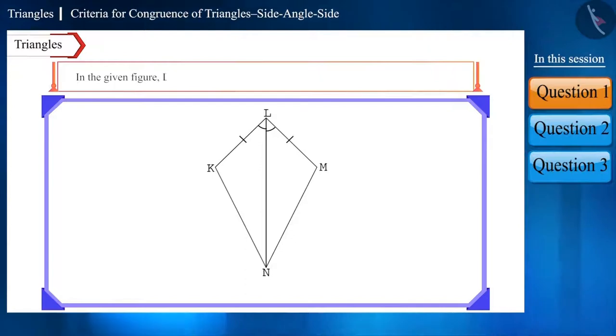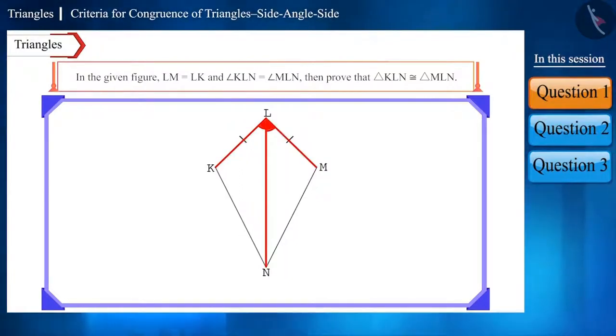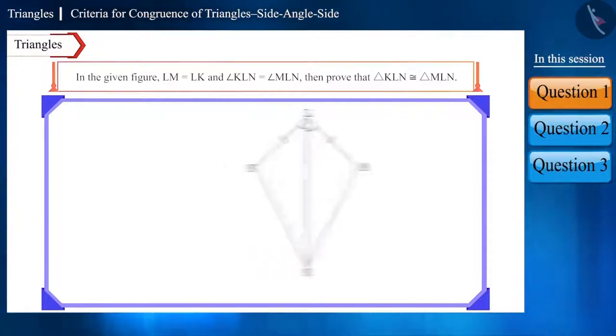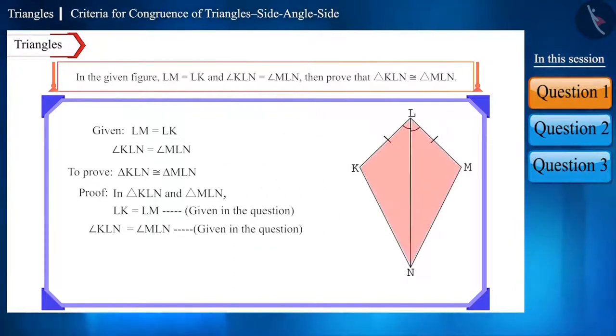In the given figure, side LM is equal to side LK and angle KLN is equal to angle MLN. So, prove that triangle KLN is congruent to triangle MLN. Let's see, if we look at the two triangles,